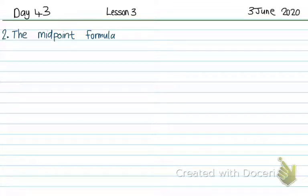Good day, Grade 10. This is Day 43, Lesson 3 of Analytical Geometry, Chapter 8. It's the 3rd of June, and today we're going to do the second of the three formulas in Analytical Geometry. The second one is the midpoint formula, or the midpoint between two points on a line segment.